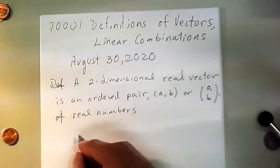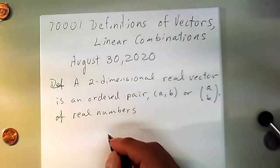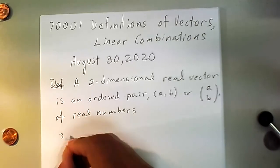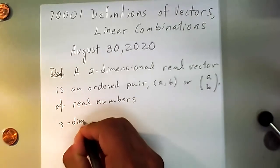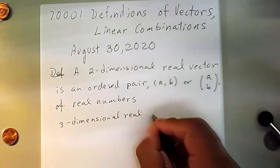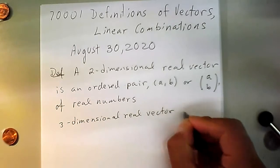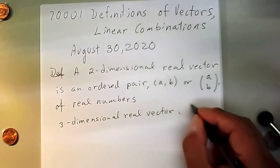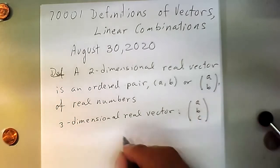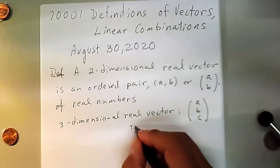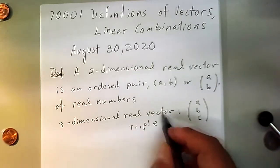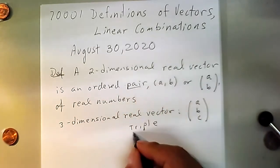A three-dimensional real vector — I'm not going to write the whole definition again — is the one that looks like (A, B, C). It's a triple, as opposed to a pair; now we have a triple.